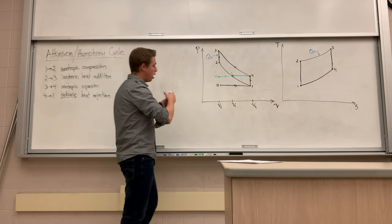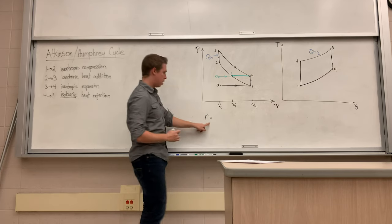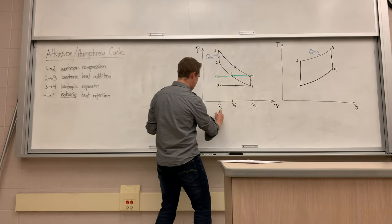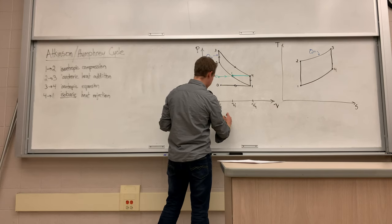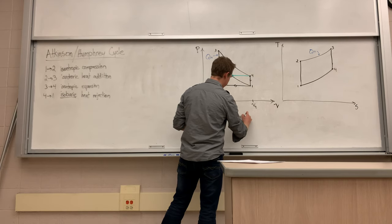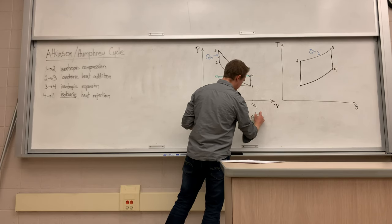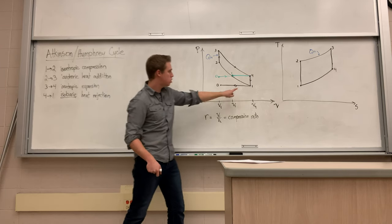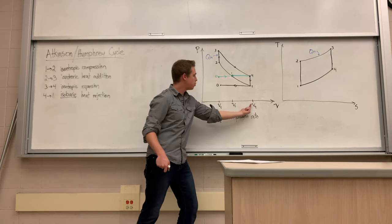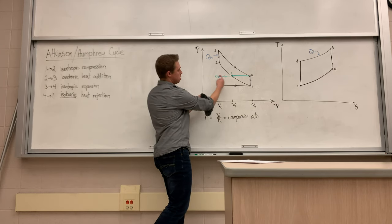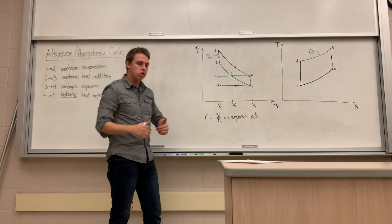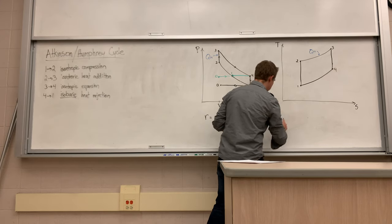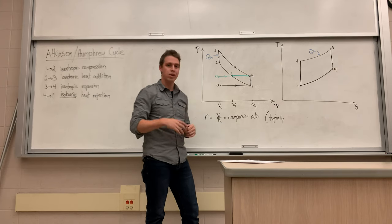Now we need to see how the efficiency changes. Before, there was one compression ratio r, which was V1 over V2. We've actually made the compression ratio smaller — it used to span the full distance, and now it only spans a shorter distance. For a normal Otto engine the compression ratio is between 10 and 14; for an Atkinson engine it's typically around 8, much lower.